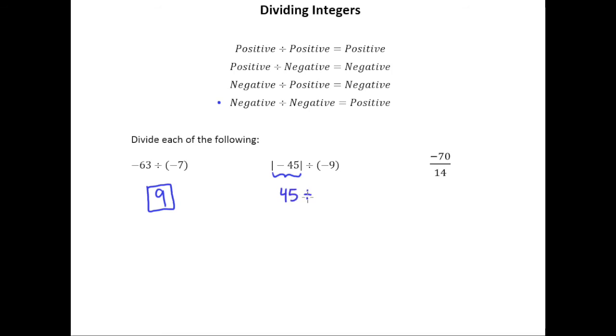We'll rewrite this problem here: 45 divided by negative 9. And so now we can see okay we're in this scenario, a positive divided by a negative, and of course the answer should be negative. And 45 divided by 9 is 5, so our answer is negative 5.